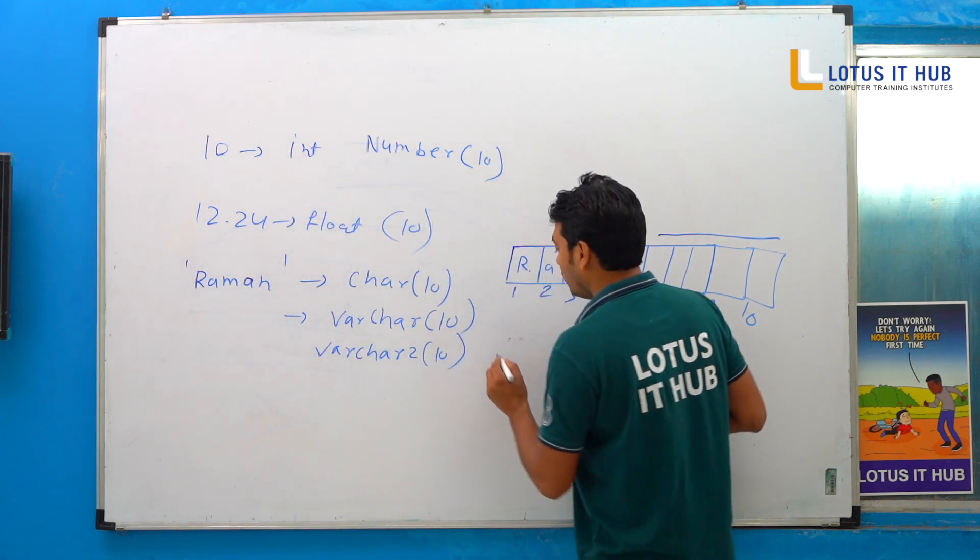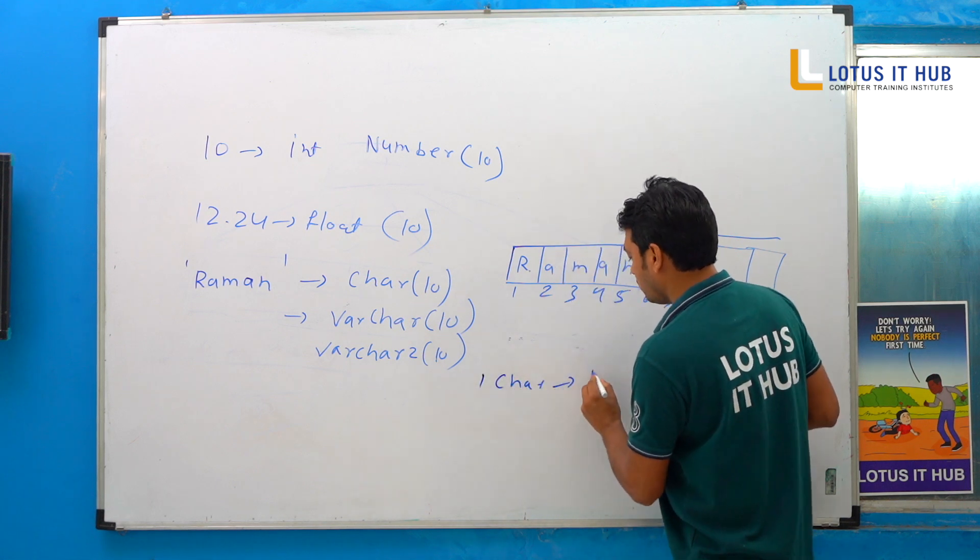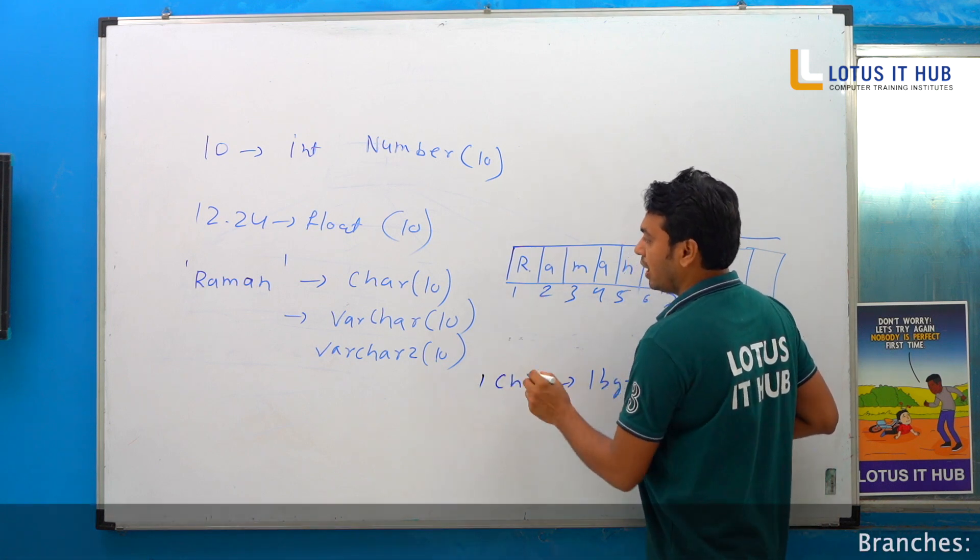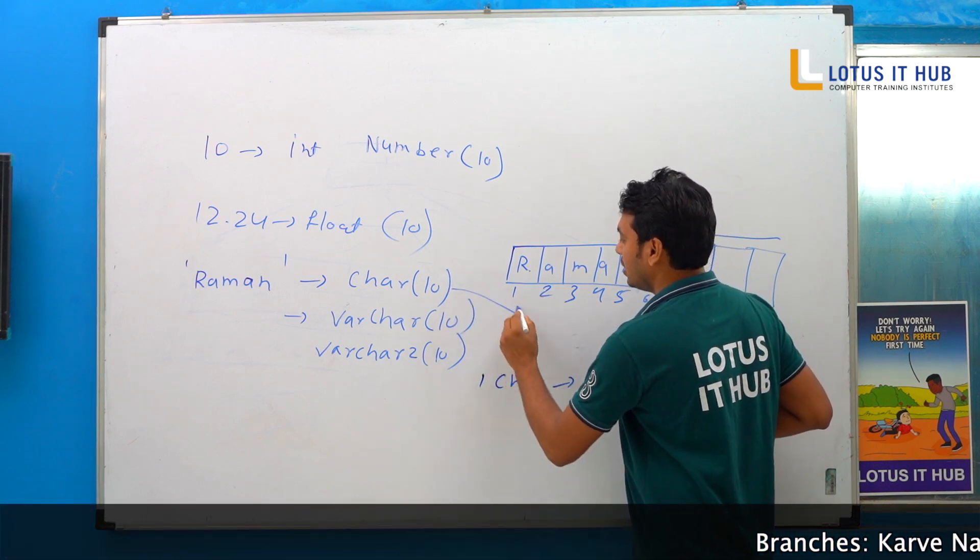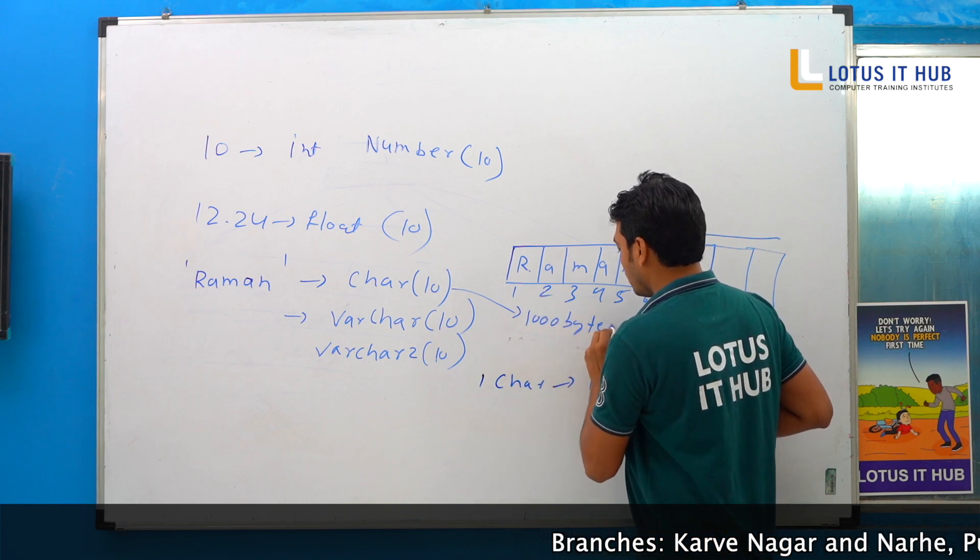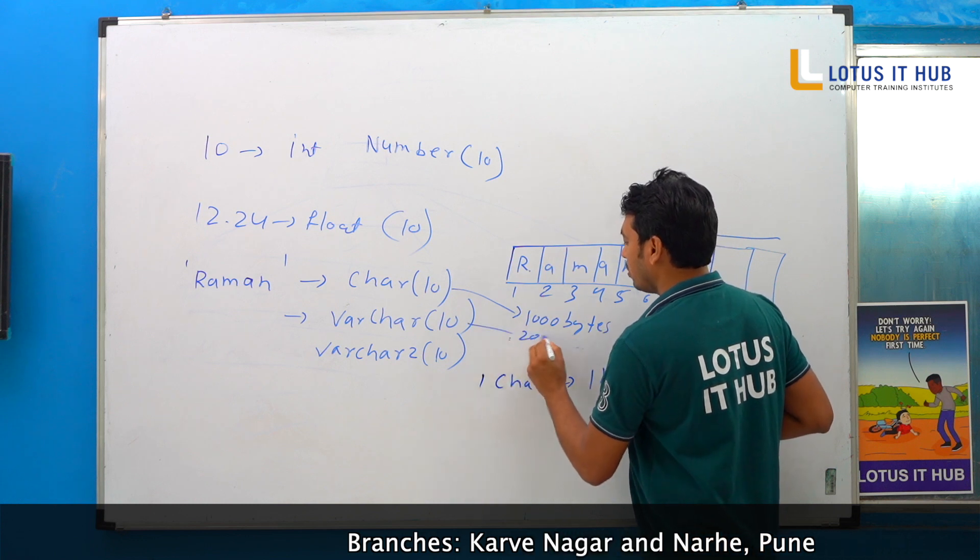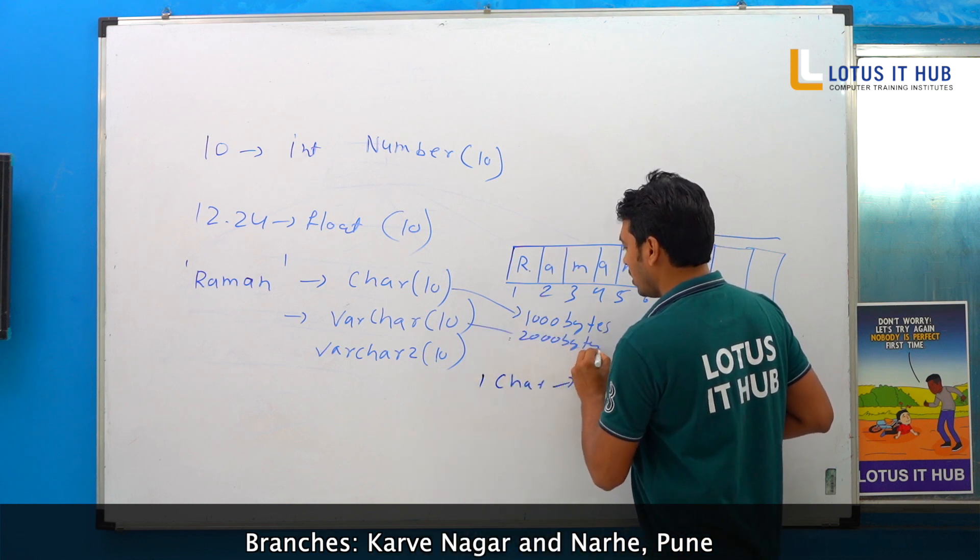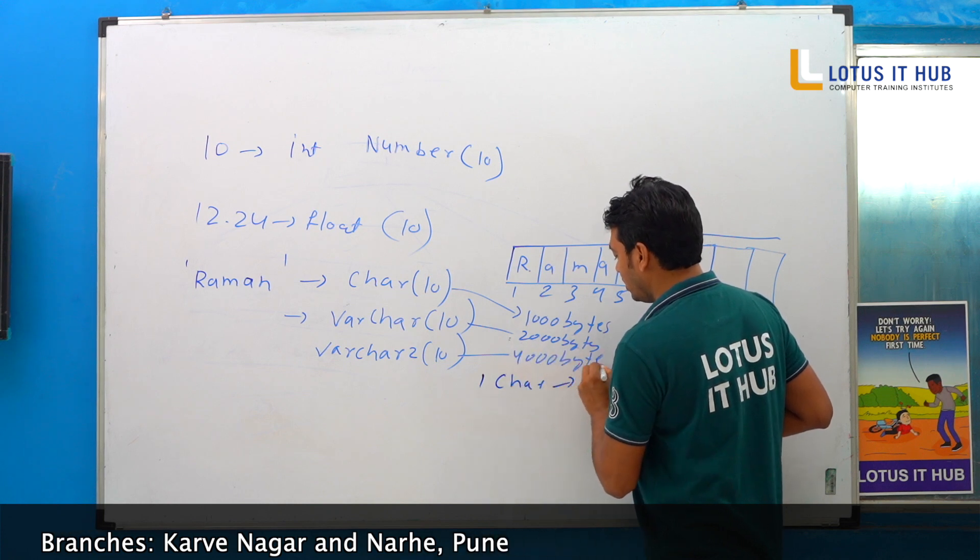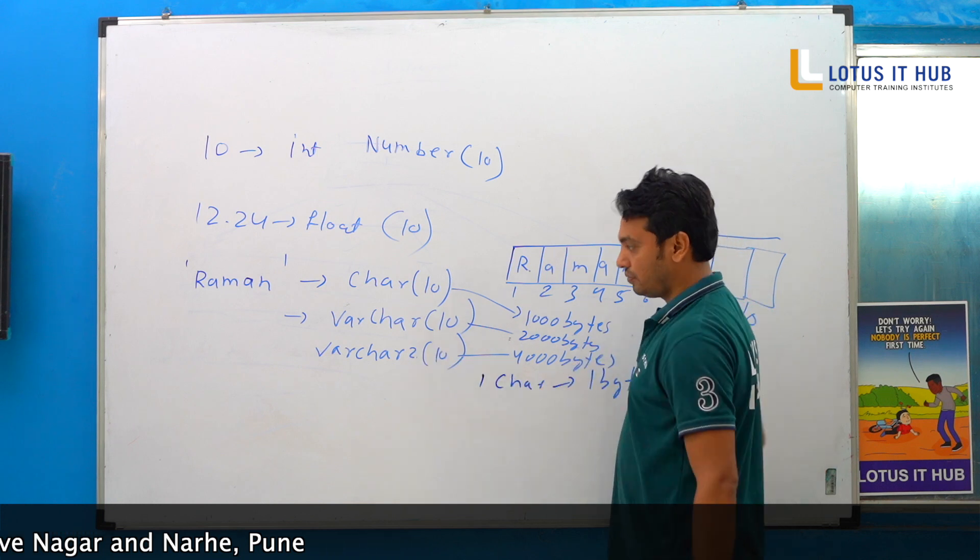Third, one character equals to one byte. One character size question: VARCHAR has 1000 bytes, VARCHAR2 has 2000 bytes, and this one has 4000 bytes. 4000 bytes in the sense, because we have 2.